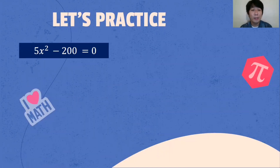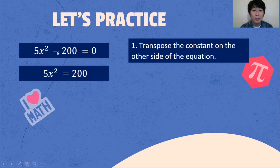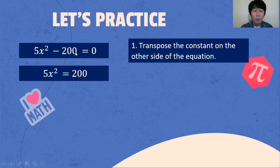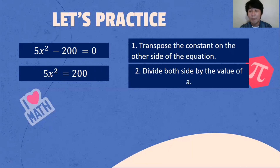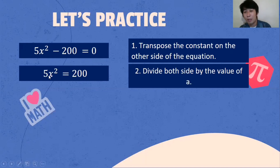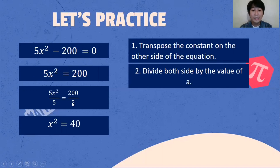Next example: 5X squared minus 200 is equal to 0. First step: transpose the constant on the other side. From negative 200, we transpose it and it becomes positive 200. Now we have a value for A, so the next step is to divide both sides by the value of A because the rule for extracting roots requires no other coefficient on the side of X squared. We divide both sides by 5: 5X squared divided by 5 equals 200 divided by 5, giving us X squared is equal to 40.